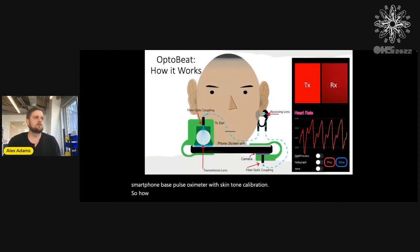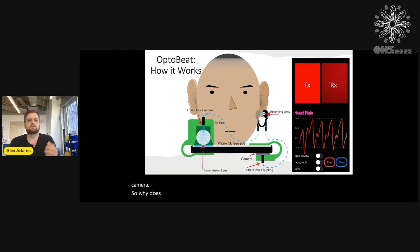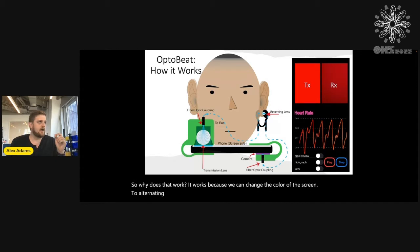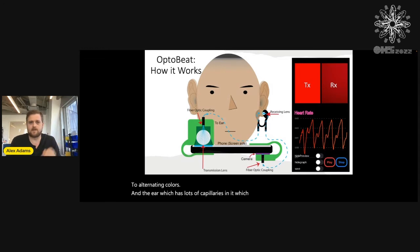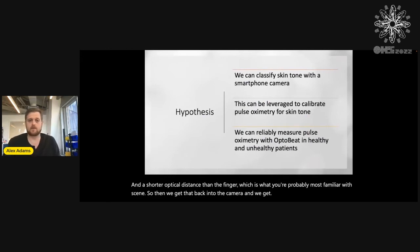How does it work? Basically, we have an app that shoots light through a little clip into a plastic lens. It goes through some fiber optic cable into your ear and out your ear into another lens into the camera. It works because we can change the color of the screen to alternating colors, and the ear — which has lots of capillaries in it — is an inclusive site for measuring pulse oximetry with a shorter optical distance than the finger.